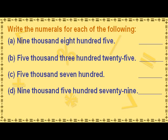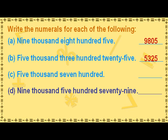Write the numerals for each of the following numbers. The numeral for nine thousand eight hundred and five is 9805. The numeral for five thousand three hundred and twenty-five is 5325. The numeral for five thousand seven hundred is 5700. The numeral for nine thousand five hundred and seventy-nine is 9579.